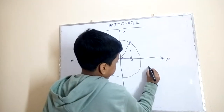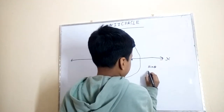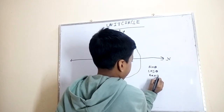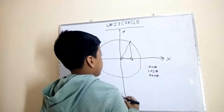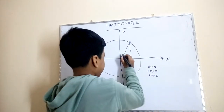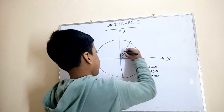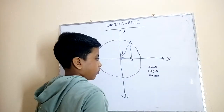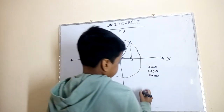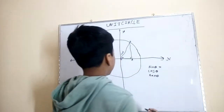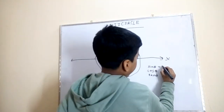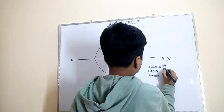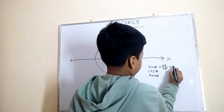Now let's find sine theta, cos theta, and tan theta. Before I do that, I'm going to write r equals one right above the hypotenuse. So sine theta will equal AB over OB. OB is one, so sine theta equals AB.